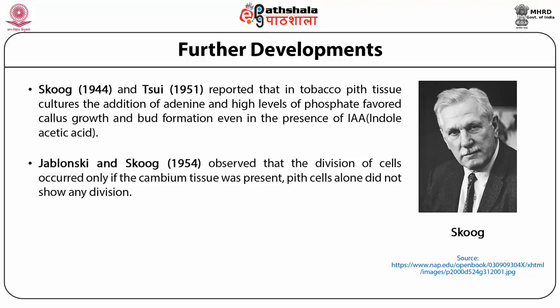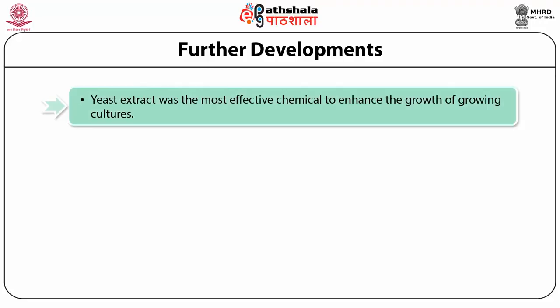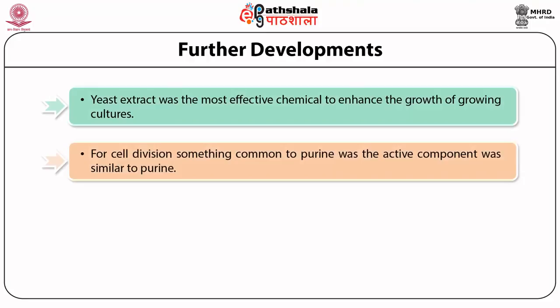Jablonski and Skoog in 1954 discovered that all cells are not capable of dividing, especially when they are alone. They found that the cambium tissue was essential if you want pith cells to divide — either the vascular tissue was giving other nutrients to the dividing cell. They carried out further tests on many plant extracts to substitute the requirement for vascular tissues and found yeast extract to be the most effective. They also established that the active component of yeast extract was something with properties common to a purine, and further found that DNA was an exceptional source of that activity.